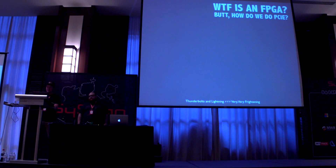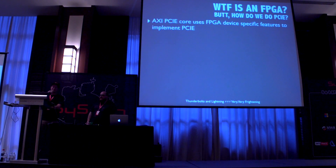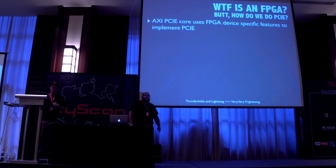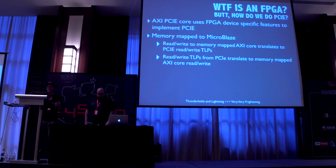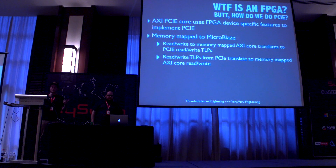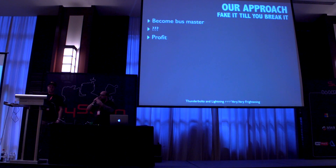The Xilinx toolkit has a PCI core which we hook up to the AXI bus. It uses device-specific features to implement the data link layer of PCI Express for us. It's memory mapped, so any reads or writes we do over AXI to this core get translated into memory read and write TLPs on the transaction bus. Any reads or writes coming in from PCI Express get translated back to reads and writes on the AXI bus. There are lots of peripherals — both soft and hard — that support AXI, so it's easy to take code from OpenCores or existing Xilinx IP and hook it up.